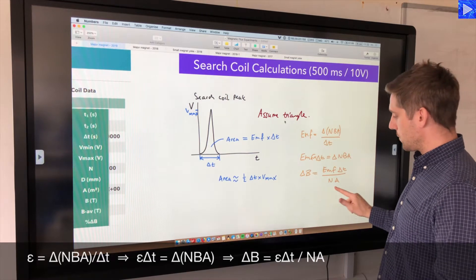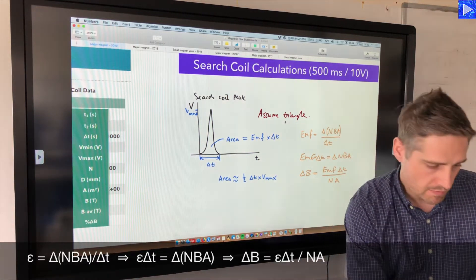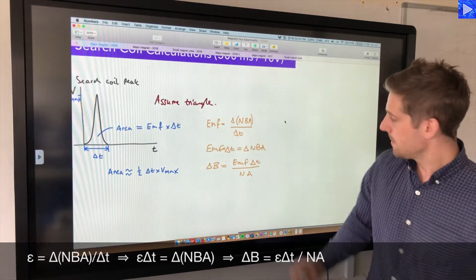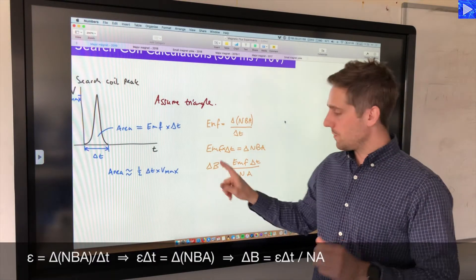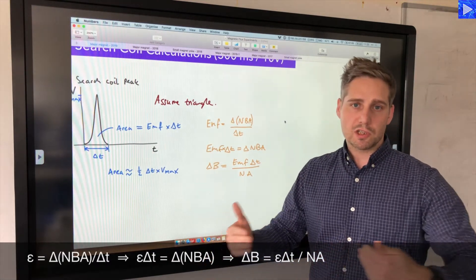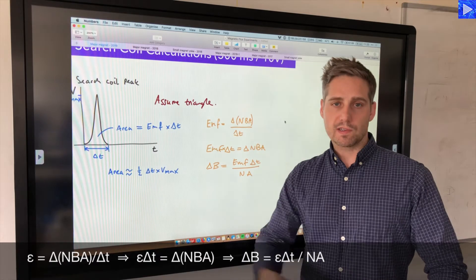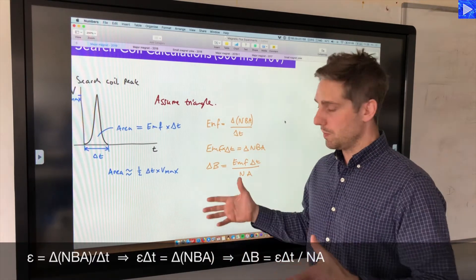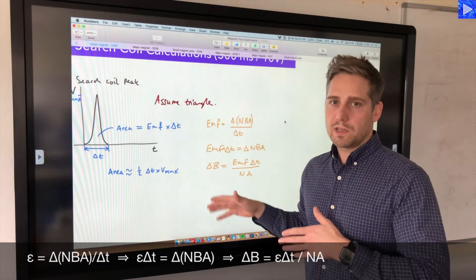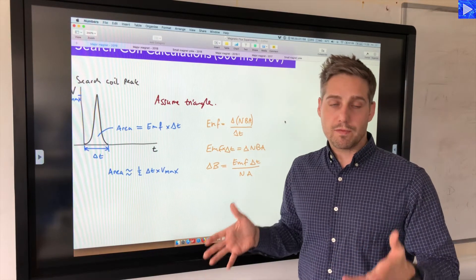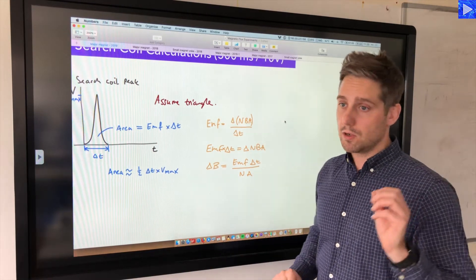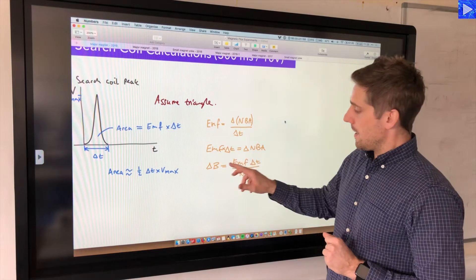If we use Faraday's law, we can actually arrive at this relationship where the change in flux density, since it's changing to zero once the search coil is out of the field—assuming it's zero—then we can say that delta B is equal to the value of the flux density of the magnet.